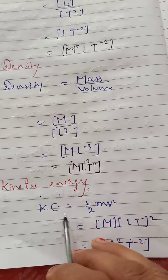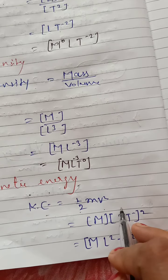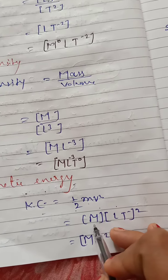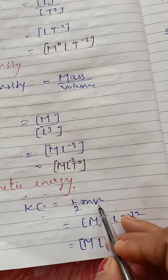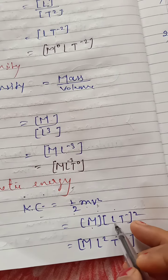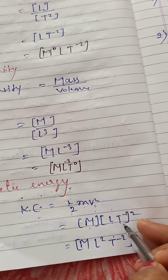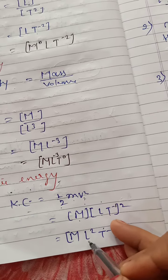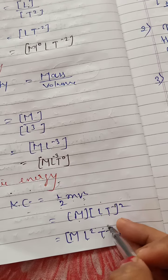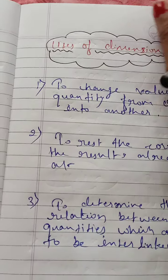Write the dimension formula of kinetic energy. Kinetic energy is equal to half MV square. So M is denoted by capital M, and we know that V is distance upon time, so it will be length and T to the power minus 1. So we get M L to the power 2 T to the power minus 2.